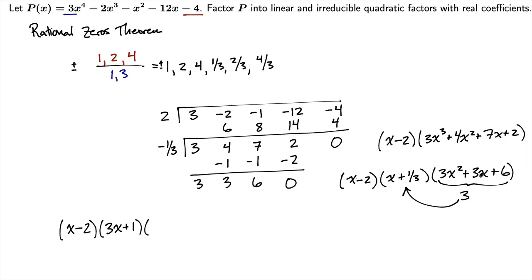And then after pulling the 3 out, I have x squared plus x plus 2. And this quadratic here is actually irreducible. We can see that by checking b squared minus 4ac. So that's 1 squared minus 4 times 1 times 2. That's negative 7, which is negative. And if you get that quantity to be negative, that means you've got an irreducible quadratic. So this is our factored form of P(x).